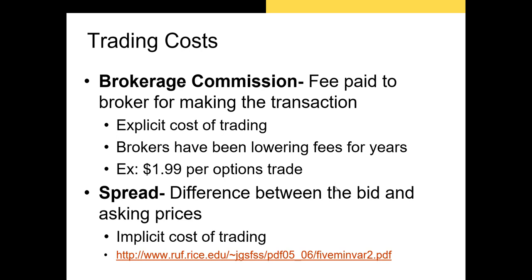There are two big trading costs you should know about: commissions and the bid-ask spread. The commission is the fee you pay to your broker so they'll process your order to buy or sell assets — it's the explicit cost of trading. Brokers have been perpetually undercutting one another and lowering fees for years. E-Trade, TD Ameritrade, and other brokers stopped charging commissions for stock trades in 2019, though they still charge for options and other securities — you'll usually pay a flat fee for options trades.